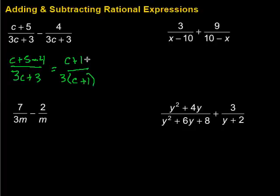So notice what happens. We have a c plus 1 and a c plus 1 on the top and bottom, so I can go ahead and cancel those out. This will become 1, this will become 1, and I'm left with just 1 over 3. So that one, we get 1 over 3.